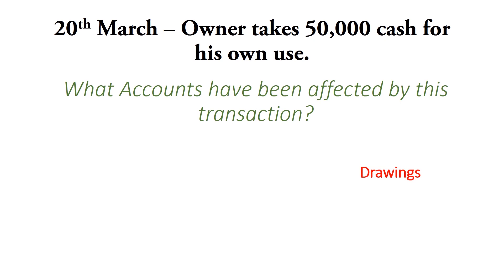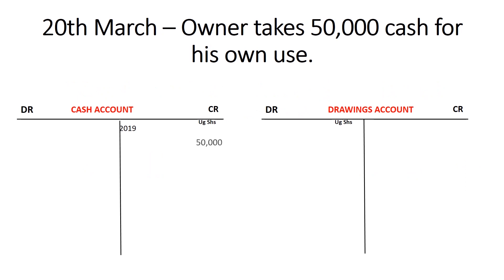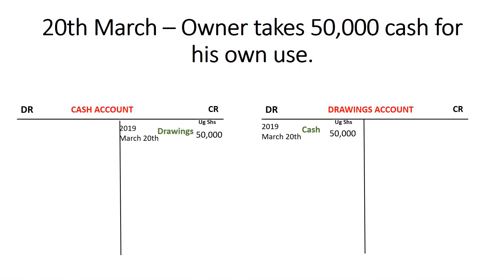So for that transaction, the two accounts affected are the drawings account and the cash account. Cash in the business is going to reduce, and the drawings account will increase. We shall credit the cash account with 50,000 and complete the double entry by debiting the drawings account with 50,000. We debit the drawings account as a substitute for having debited the capital account, since drawings reduce capital.